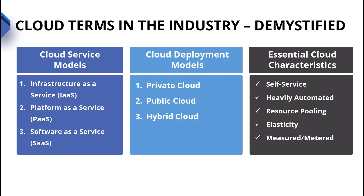Next, we have elasticity — our ability to scale on demand. We can add more resources as we need them, perhaps in response to a workload that has seasonal demand or maybe an application that's getting hit pretty hard. It can scale automatically, or perhaps we can scale on demand.